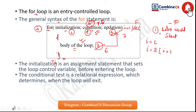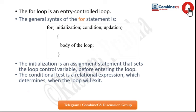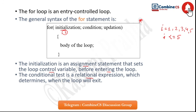Let me explain once more clearly. Initialization is an assignment statement that sets the loop control variable before the loop begins, and it executes only one time — this is a very important interview question. The conditional test is a relational expression. For example, if i equals 1 and the condition is i less than or equal to 5, then i will print 1, 2, 3, 4, 5.